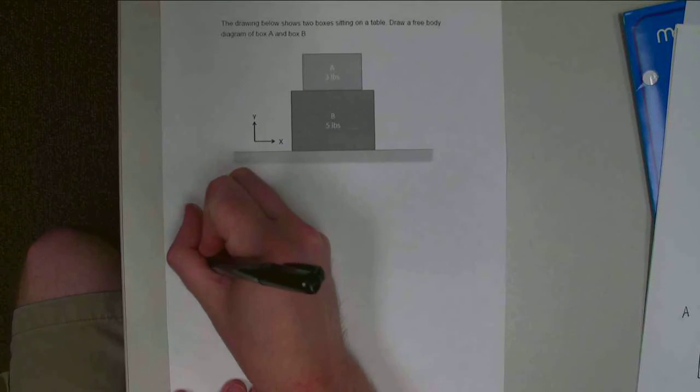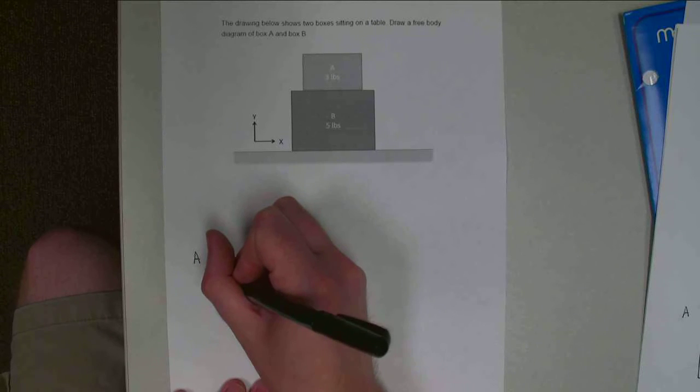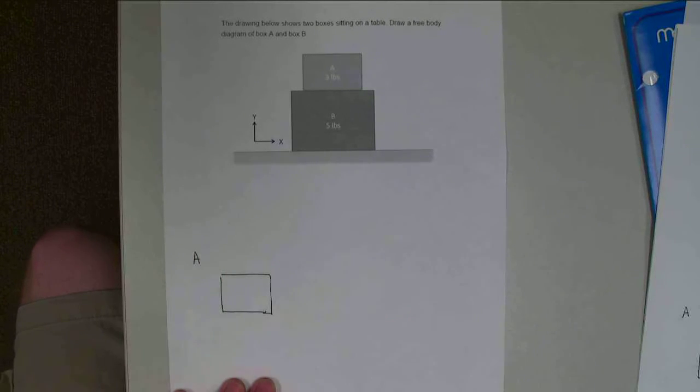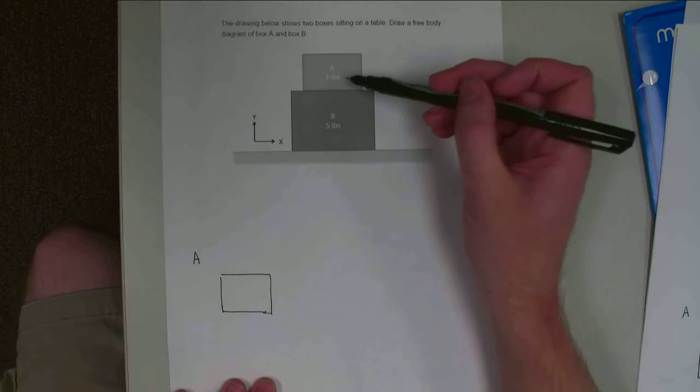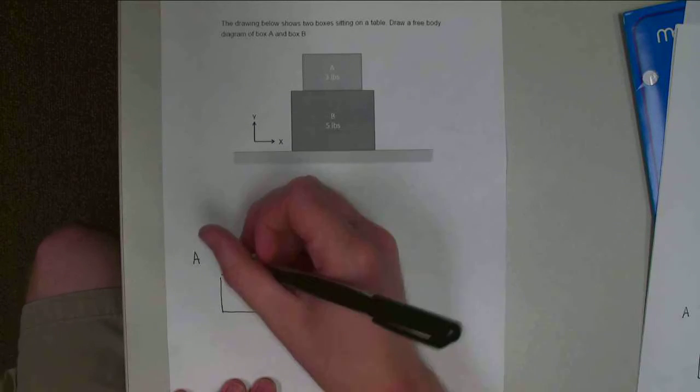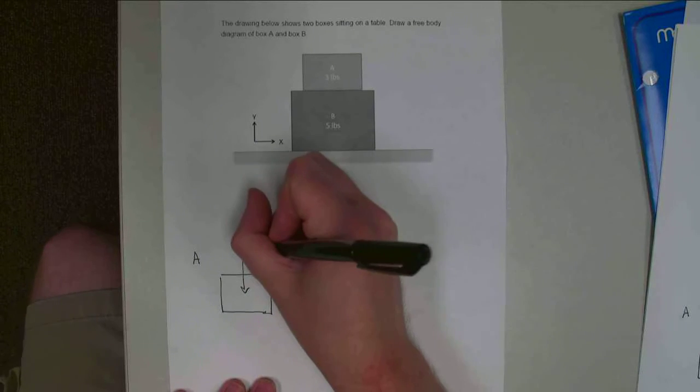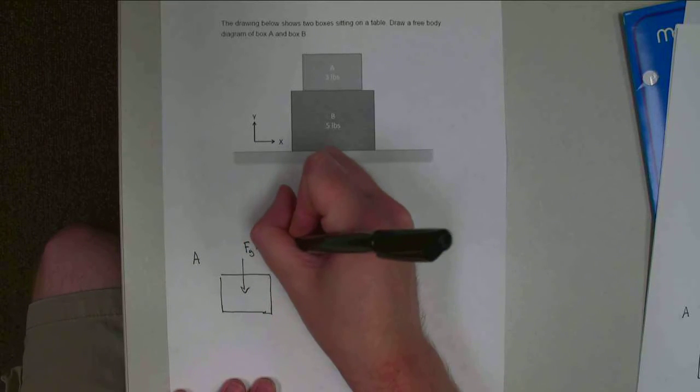First, for box A, we're going to draw our box separated from all of the surroundings. So that's just box A. Then we have to pay attention to what forces are acting on box A. This box A has got a weight of three pounds, so we're going to have a gravity force. We're going to say FG, and that's equal to three pounds.